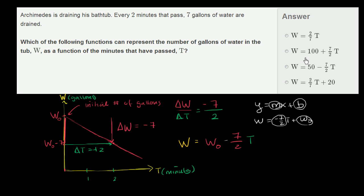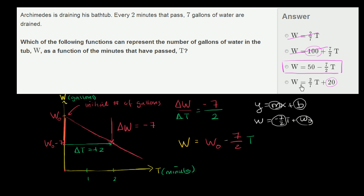So which of the answer choices match that pattern? I should start with some positive number of gallons and subtract seven-halves t. The only one that matches is 50 minus seven-halves t. Even without thinking about slope, you'd reason: I need to start with a certain number of gallons that only decreases over time. One choice has zero gallons at time equals zero — that doesn't work. Another starts at 100 gallons but increases over time, so the faucet is on, not draining. Another also increases over time. The only choice where I start with gallons and they decrease — because the coefficient is negative — is 50 minus seven-halves t.